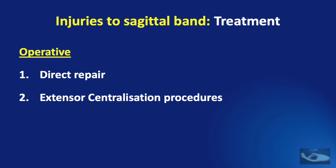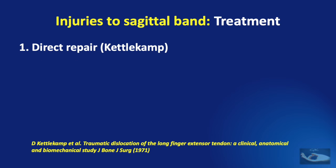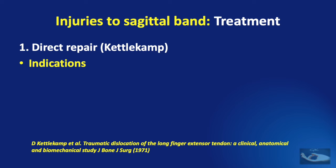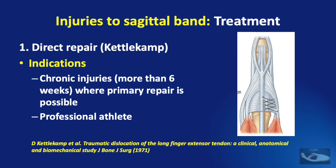Operative management consists of two modalities: direct repair of the ruptured sagittal band, and extensor centralization procedures. The direct repair method advocated by Kettle Camp is indicated in chronic injuries — more than six weeks — where primary repair of the ruptured sagittal band is possible, and also in the professional athlete for whom the strength of metacarpophalangeal joint flexion and extension is very important. The repair is done using 5-0 polypropylene suture with crisscross overlapping sutures after freshening the edges of the ruptured sagittal band and ensuring they come together.